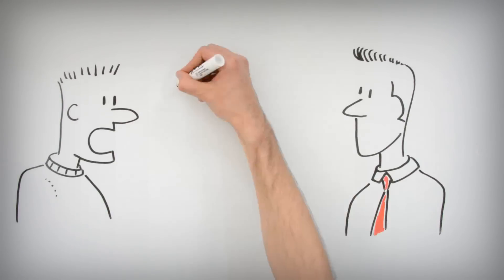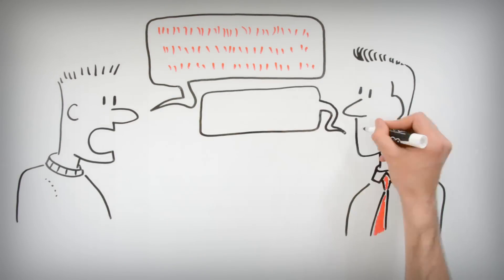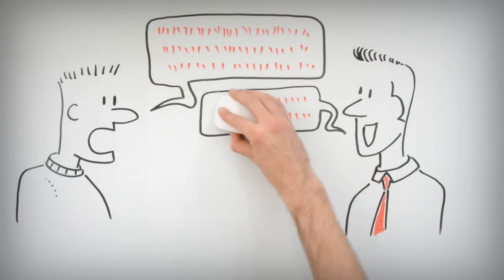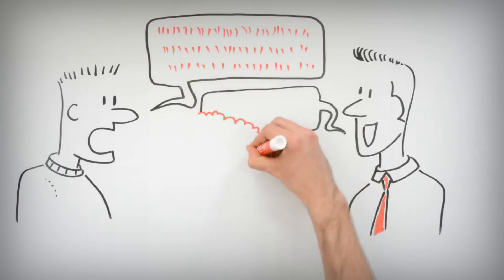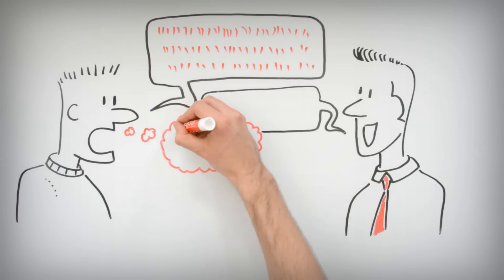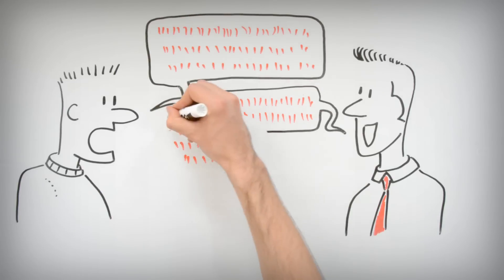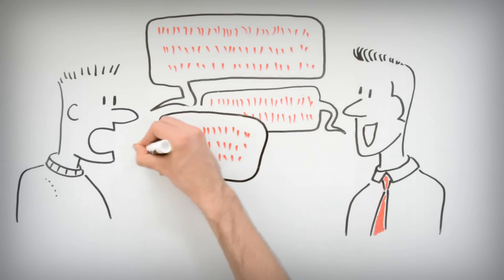Whenever you're talking to people, say what you have to say, but once they start replying back to you, completely ignore it. It can't possibly be interesting or important. In fact, it is critical that you use this time to prepare for what you're going to say once they're done. Think very hard about what absolutely genius thing you're going to say next. Also, make it really obvious that this is exactly what you're doing by not showing any form of acknowledgement once they're done. And if you can, start your next thought even if they're not quite finished with their final sentence.